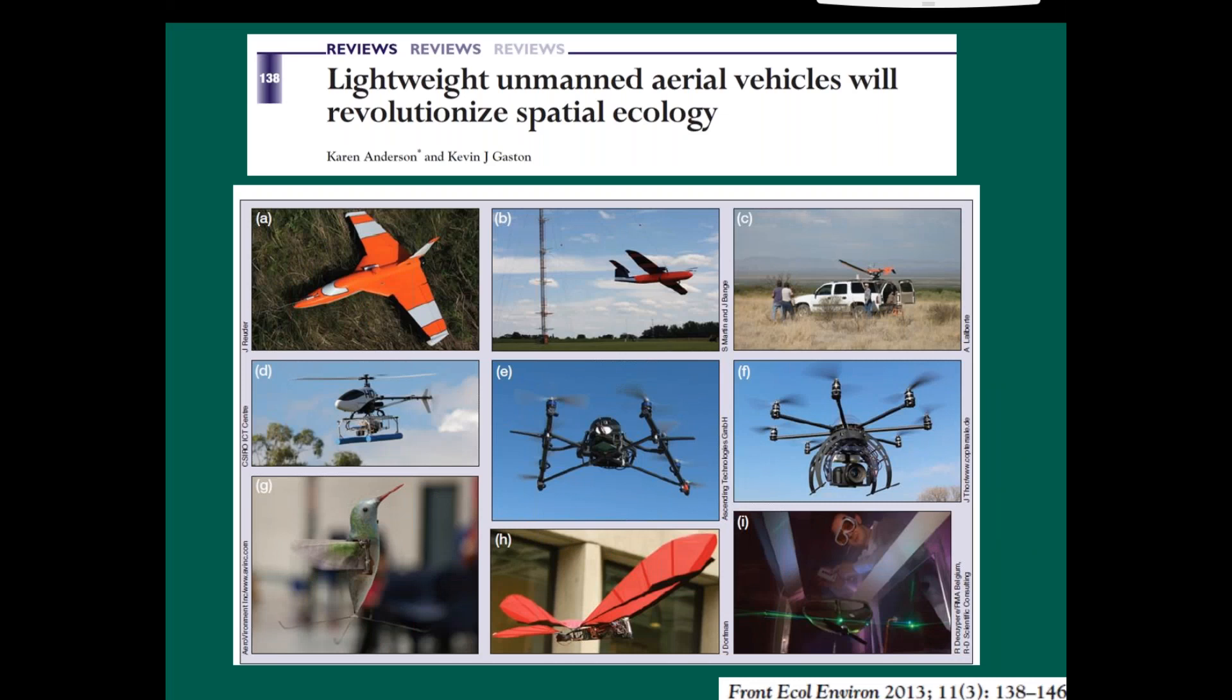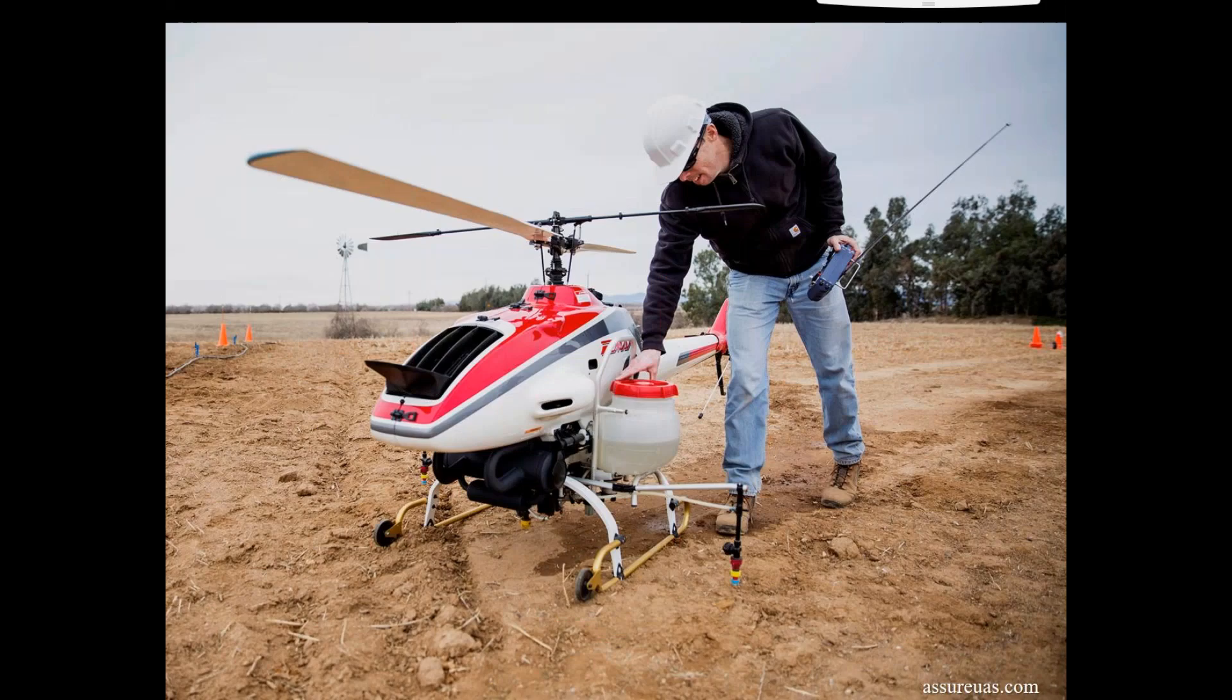So, the most common ones that we come across are what's called the fixed wing, which looks like a miniature version of a plane or a jet. And also the rotor or copter type drones that you can see there, often up to eight rotors at a time. And we've got some other tiny ones that people are working on at the moment, like the hummingbird one there.